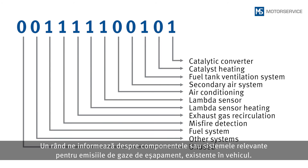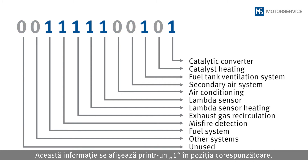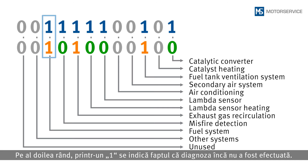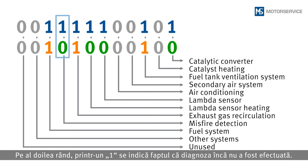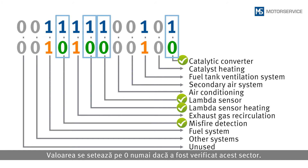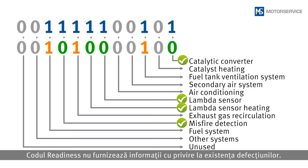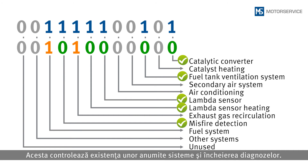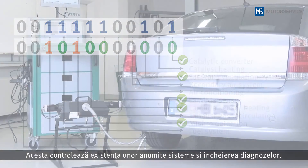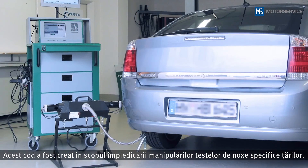One row provides information about which exhaust gas related components or systems are present in this vehicle, indicated by a 1 in the corresponding position. In the second row, a 1 indicates that the applicable diagnostic test has not yet been performed; the value is only set to zero once that area has been tested. The readiness code does not indicate whether errors are present — it is purely a check of whether certain systems are present and whether the diagnostic tests on these systems are finished. It was established to prevent manipulation in country-specific exhaust gas tests.